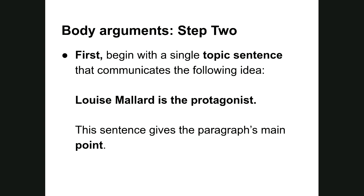In step two, we begin our paragraph with our Point — the topic sentence. We're simply going to say who the protagonist of the story is. You would write: 'Louise Mallard is the protagonist.' For your paper two, you'll determine who the main character is for 'Sonny's Blues' or 'Paul's Case' depending on which story you wrote about, and bluntly state that in one sentence. Step two really only requires one paragraph, though you may divide it into two if it gets too long.